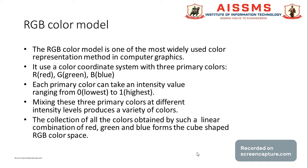The RGB color model is a process of creating more colors using a few primary colors. There are two types of color model: the additive color model and the subtractive color model. In the additive color model, light is used to display the color, while in the subtractive color model, printing inks are used to produce the color. The most common additive color model is the RGB color model, while the CMYK color model is used for printing purposes.